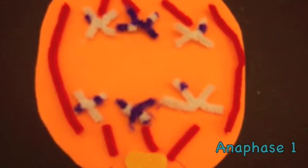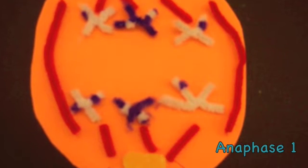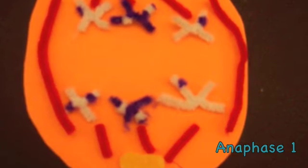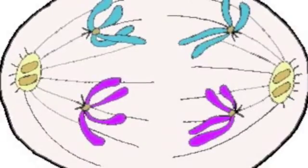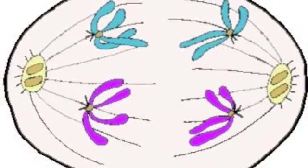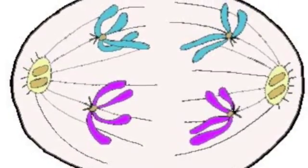Anaphase I is the separation of each homologous pair of chromosomes. Chromosomes move toward opposite ends of the cell. They are pulled in this direction by microtubules present in the spindle apparatus. The microtubules pull the pairs of sister chromatids apart by breaking down and releasing proteins.